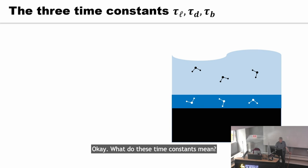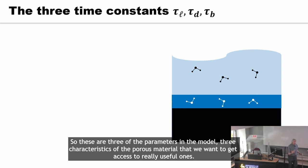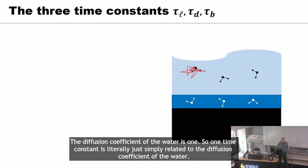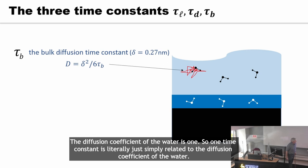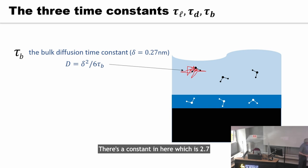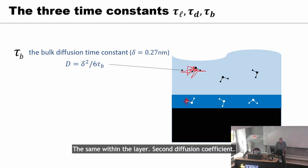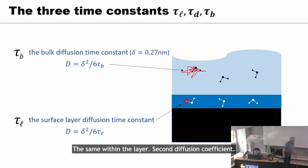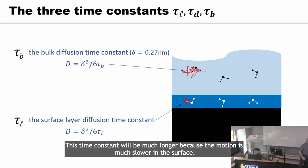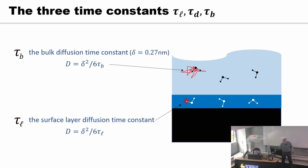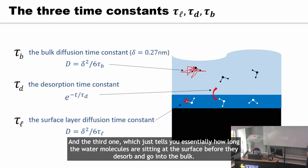What do these time constants mean? These are three of the parameters in the model — three characteristics of the porous material we want to get access to. The diffusion coefficient of the water is one, literally related to one time constant, involving a constant of 2.7 ångströms, which is the thickness of a layer of water and the standard distance between pairs of water molecules. The second time constant relates to a surface diffusion coefficient — much longer because motion is much slower at the surface. The third time constant tells you how long water molecules are sitting at the surface before they dissolve and go into the bulk.